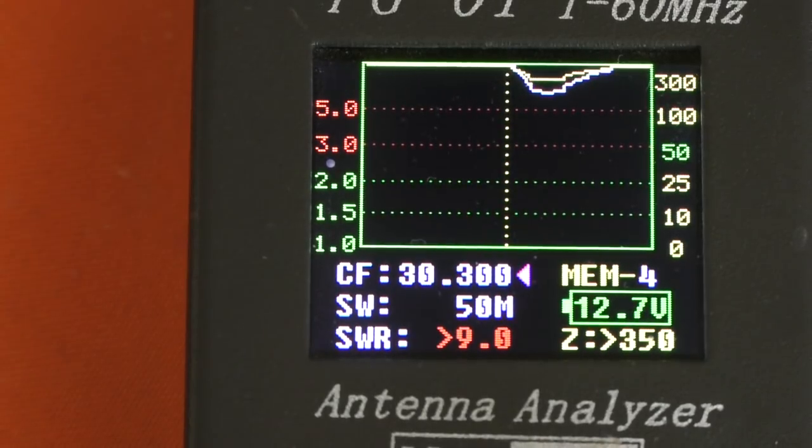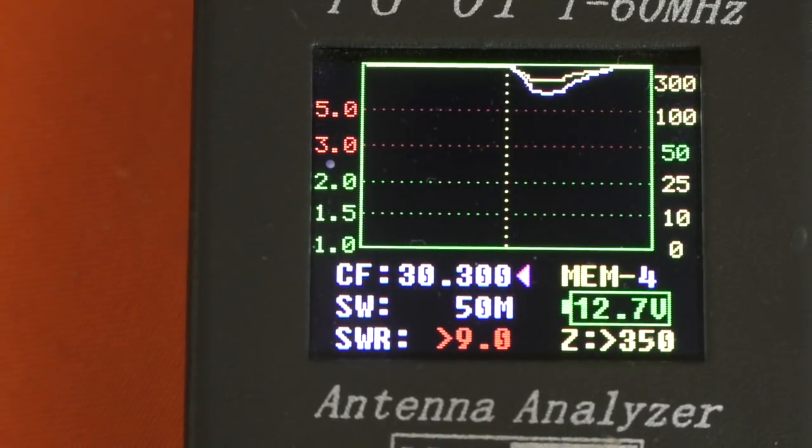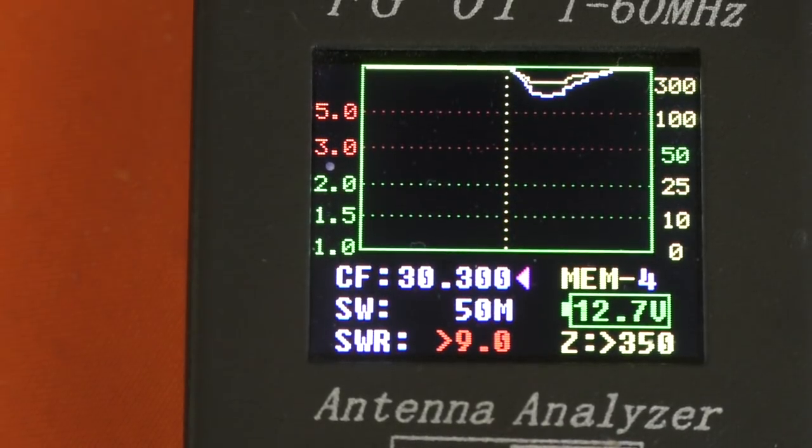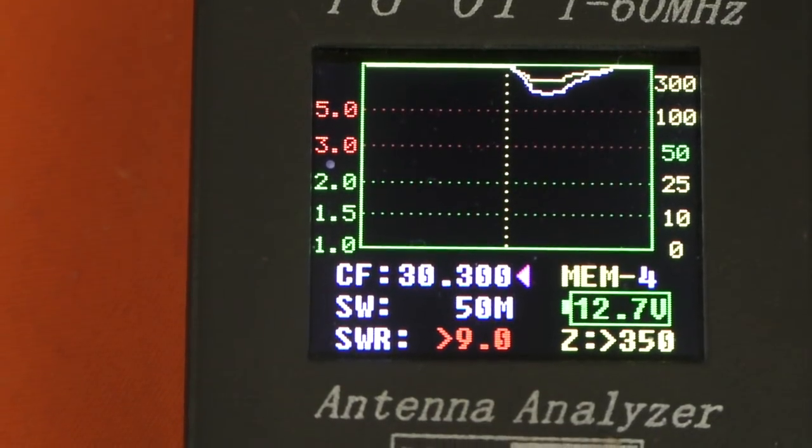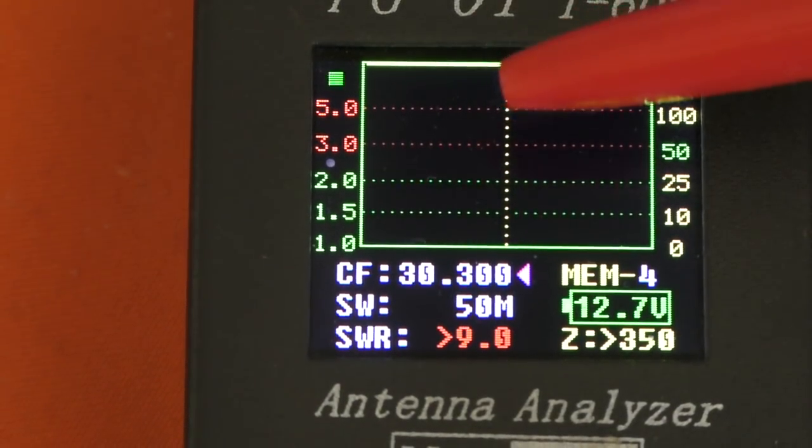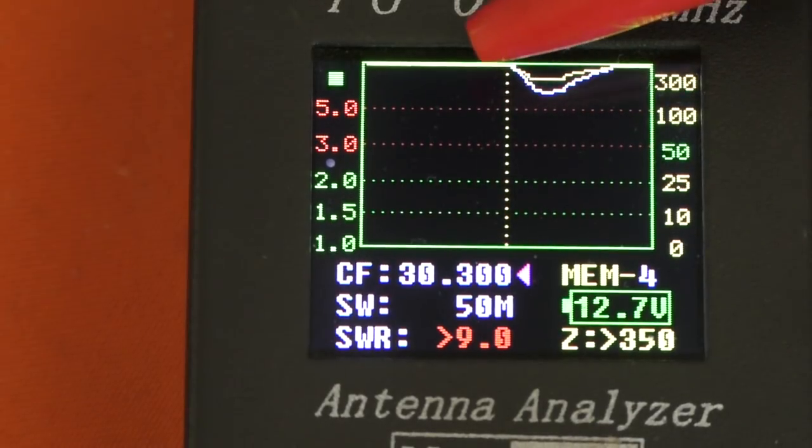Simon, one of the regular viewers, asked how I could move that point. So that's how you do it, Simon. If it was on 29 megs, take a few turns off the choke and the resonance point will go higher in frequency.